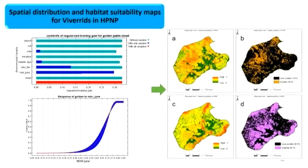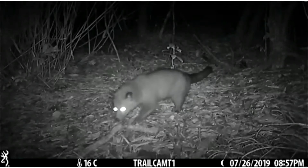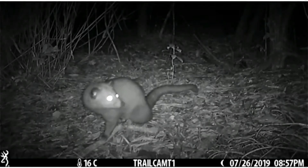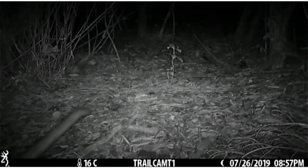Moving on to viverrids — the golden palm civet in Horton Plains. This species was distributed mostly in the forested areas, such as the Kirigalpotta and other sites. The ring-tailed civet, the terrestrial one, was again found at the cloud forest edge. This is an observation of the golden palm civet recorded at Horton Plains.